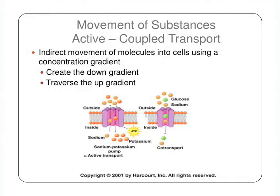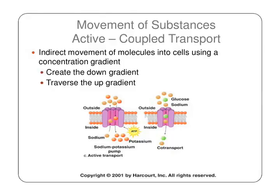Lastly, there's coupled transport, which is similar to the sodium-potassium pump. The main difference is that ATP is used indirectly — it forms a gradient with a downward gradient and an upward gradient, and the ATP energy helps facilitate the movement of molecules inside and outside of the cell, as shown in the picture.